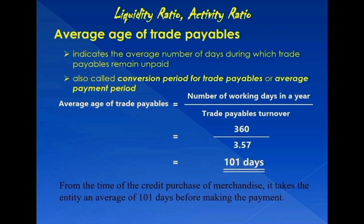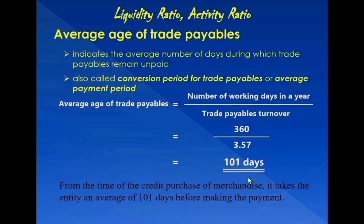For this ratio to be meaningful, it must be compared with the credit period extended to the entity. For example, if the entity is provided by suppliers 90 days during which to pay its trade payables, having 101 days as the average age of trade payables means that this ratio is not good. Because the entity actually pays beyond the credit period of 90 days, the entity pays its trade payables late, which most likely will damage its reputation with its suppliers.